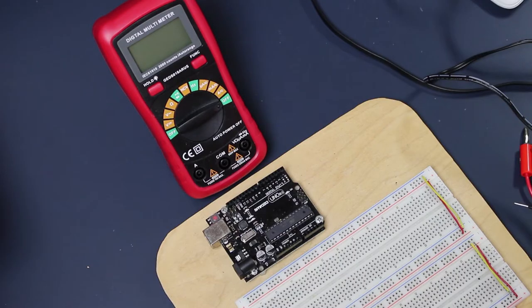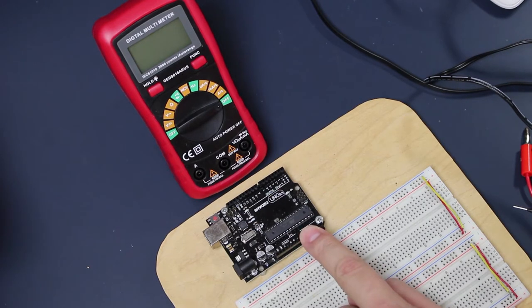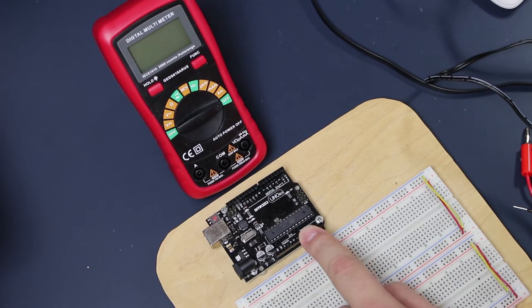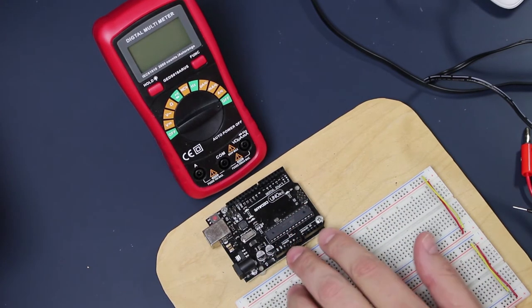So let's see what materials we're going to need for this exercise. The first thing we're going to need is an Arduino Uno. That's my go-to board for doing tests and experiments because it's easy to use.